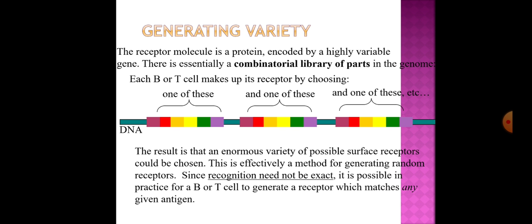The receptor molecule is a protein encoded by a highly variable gene — there is essentially a combinatorial library of parts in the genome. The result is that an enormous variety of possible surface receptors can be generated, effectively a method for generating random receptors. Since recognition need not be exact, it is possible in practice for a B or T cell to generate a receptor which matches any given antigen.